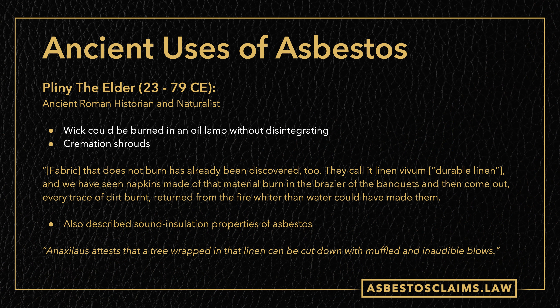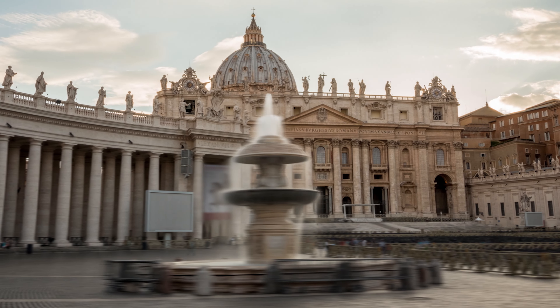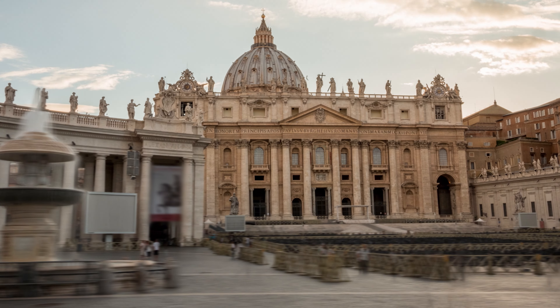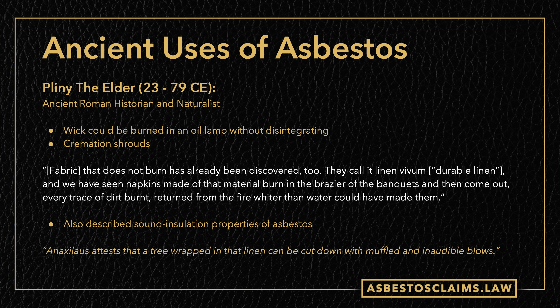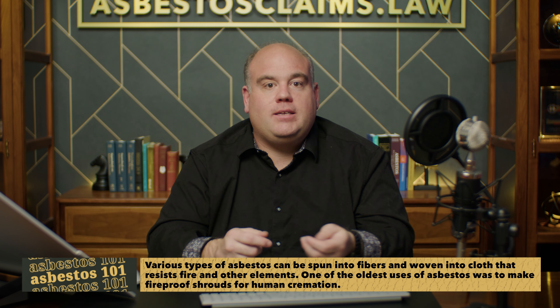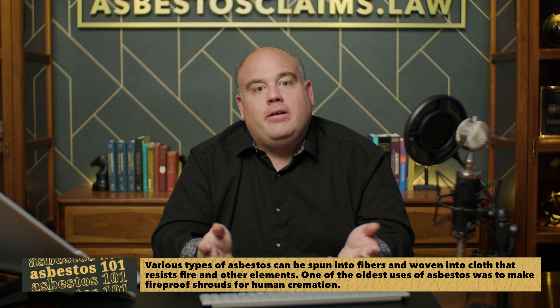Pliny the Elder found that you could use an asbestos wick in an oil lamp that could burn without disintegrating, and asbestos was used in cremation shrouds. In fact, one particular shroud used for some ancient king found its way into the Vatican, discovered and given to them in the 1700s. One text says: fabric that does not burn has already been discovered — they call it linen vivum, durable linen — and we've seen napkins made of that material burned in the brazier at banquets and then come out, every trace of dirt burned away, returned from the fire whiter than water could have made them. Think about how amazing that must have been to an ancient person — they had napkins and tablecloths they could clean with fire.